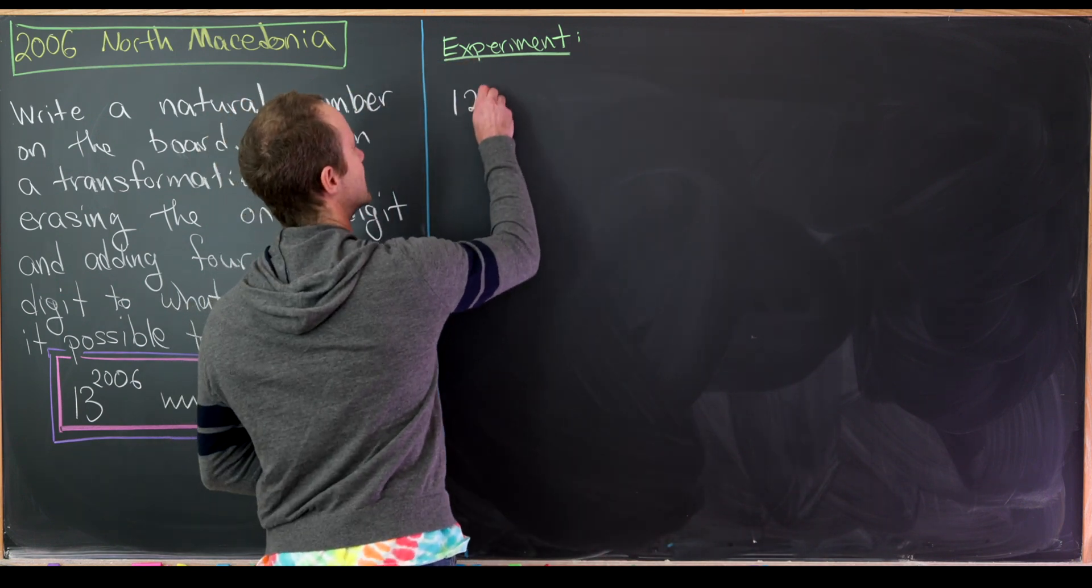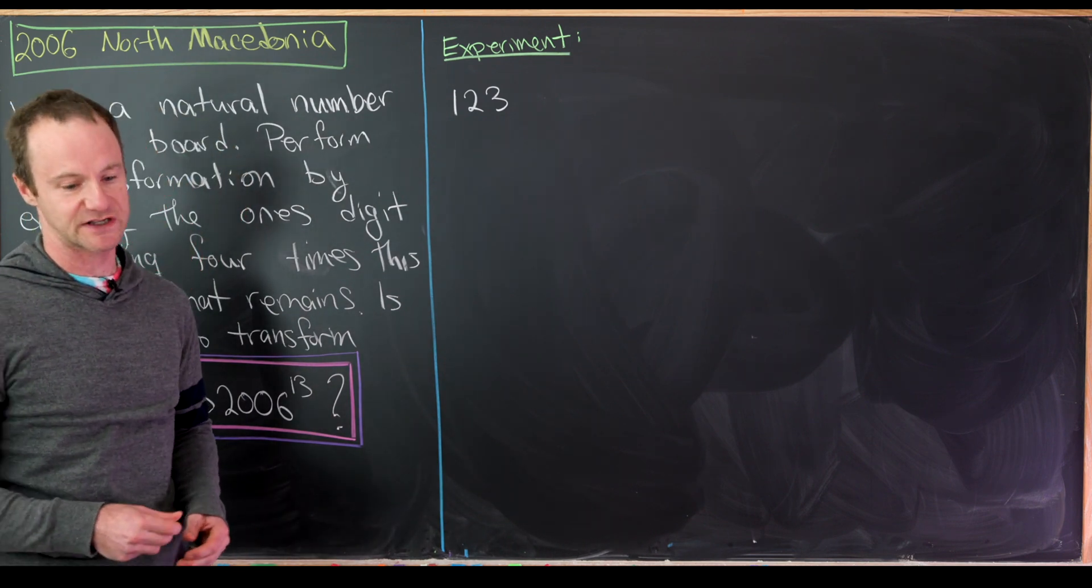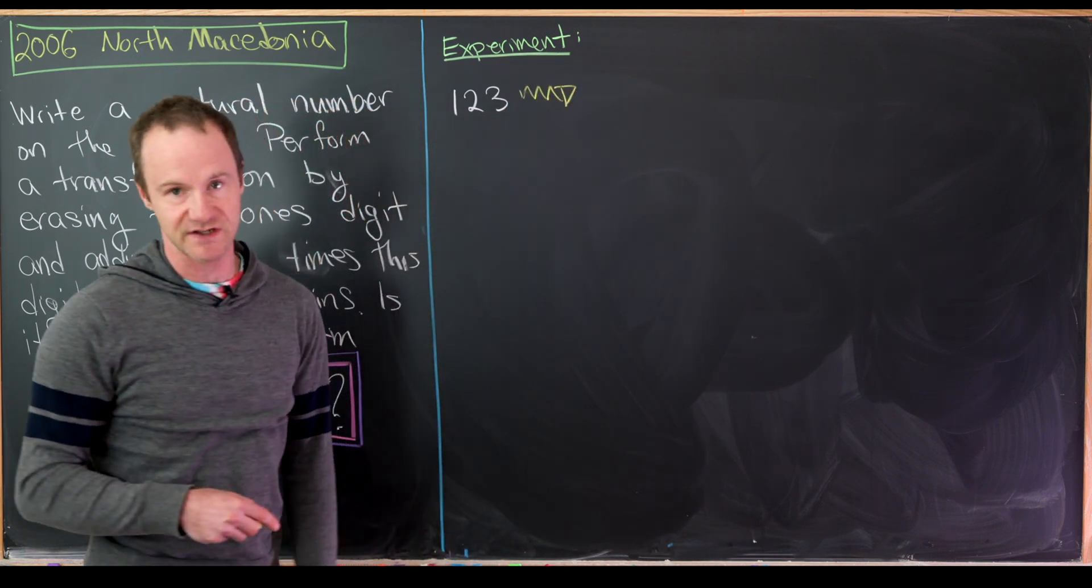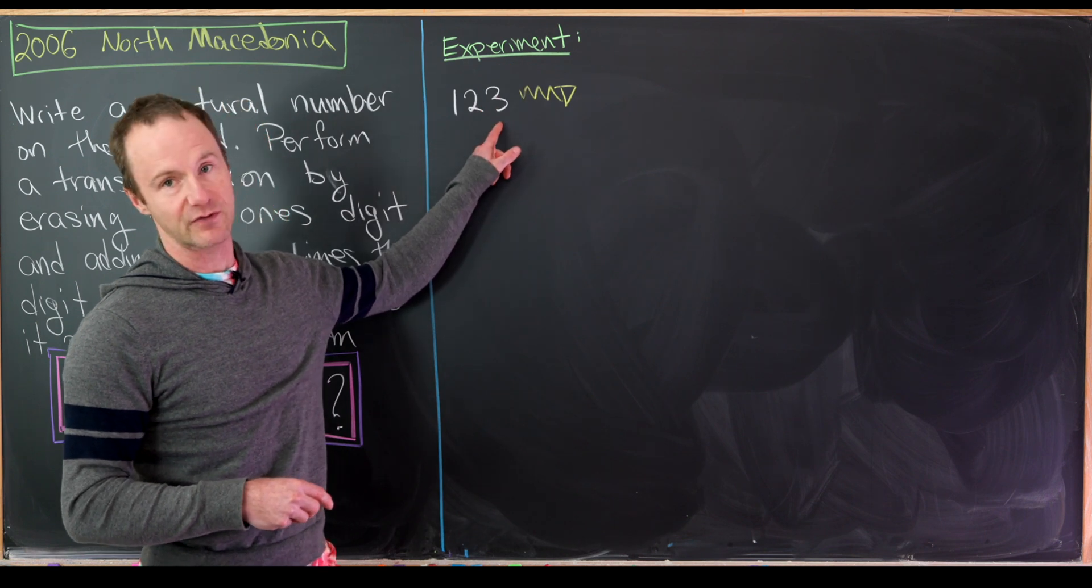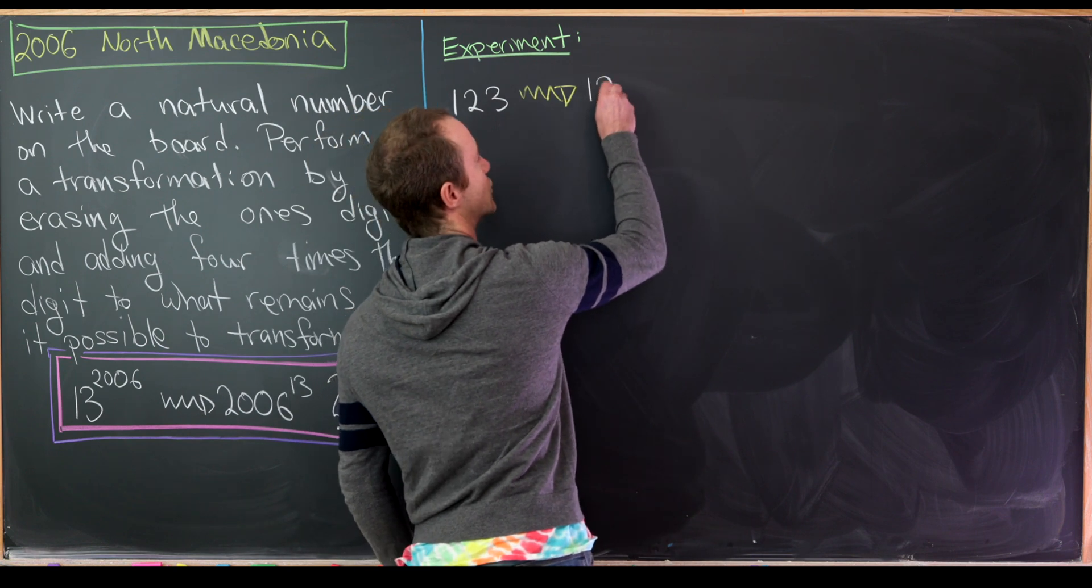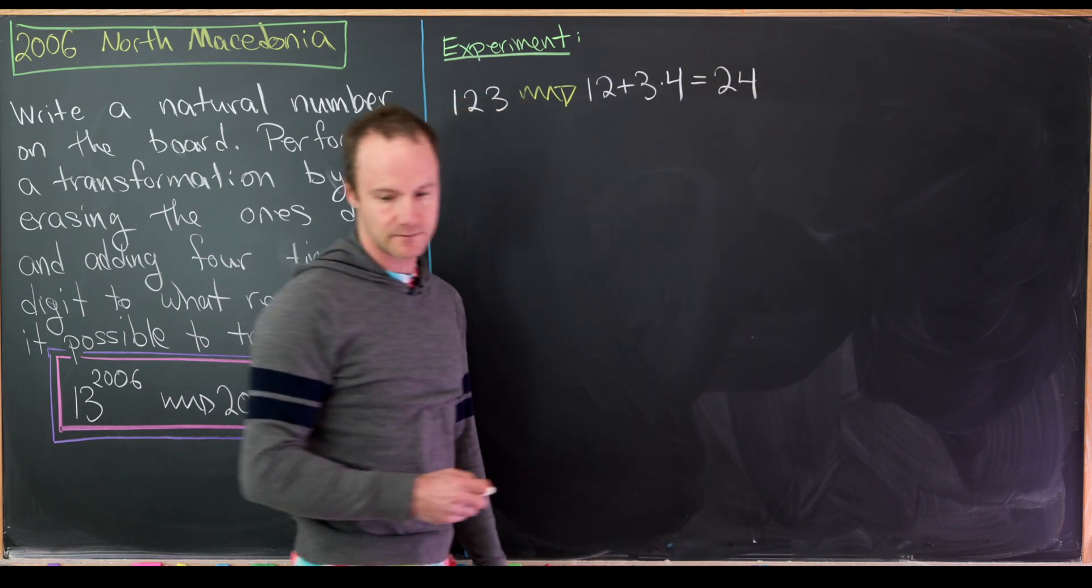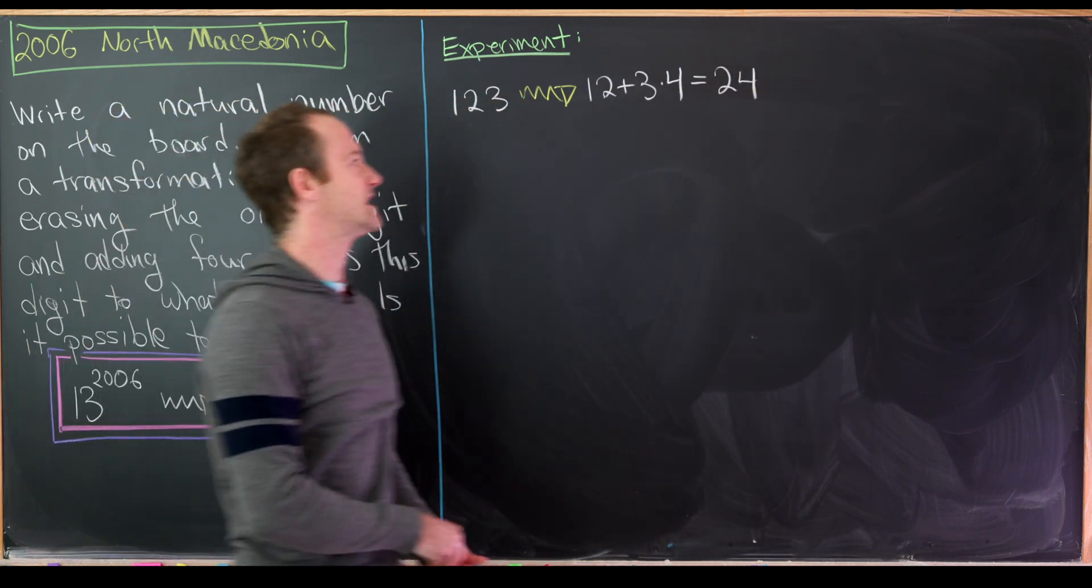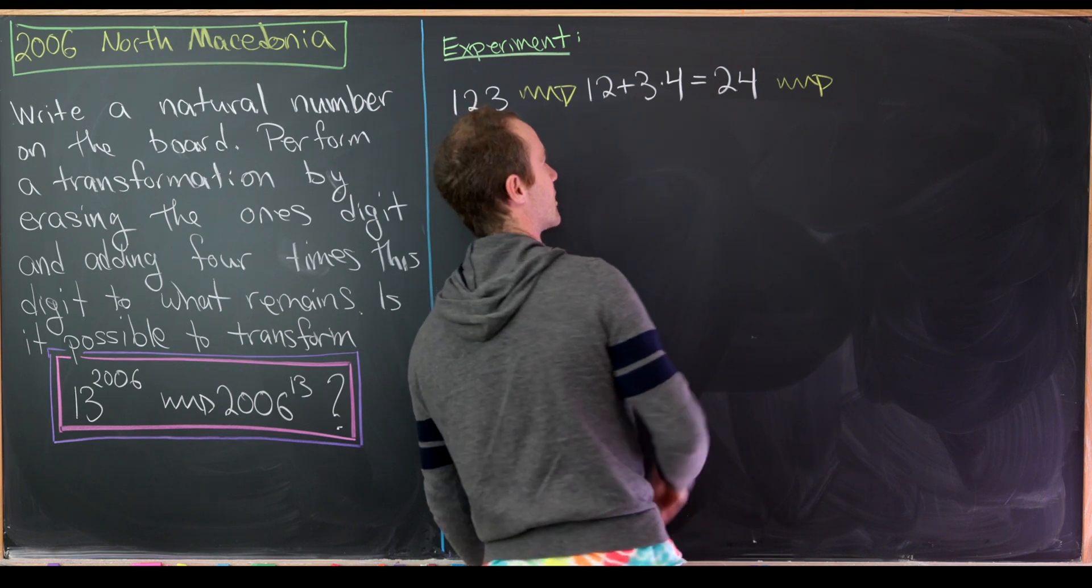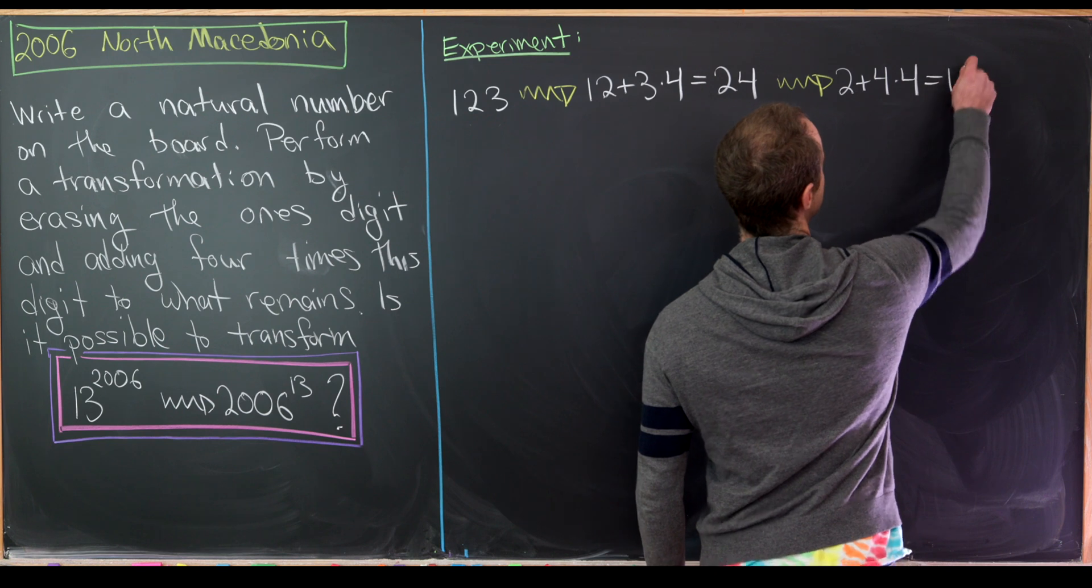Let's maybe start with the number 123 and let's have this yellow arrow be our transformation. So we erase the ones digit, we'll erase 3, we'll multiply 3 by 4 and add it to what remains which is 12. So we'll do 12 plus 3 times 4. That gives us 24. So let's keep going. For the next step we'll erase 4, multiply that by 4 and add it to 2. So we have 2 plus 4 times 4 that's equal to 18.